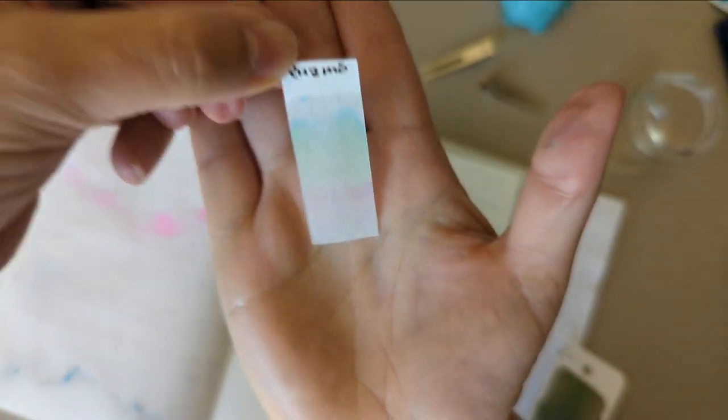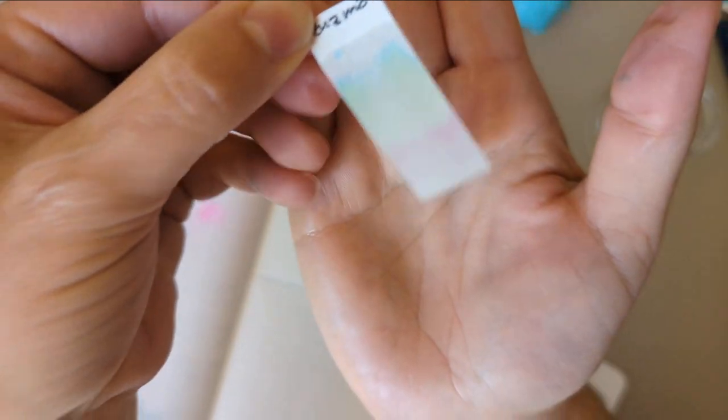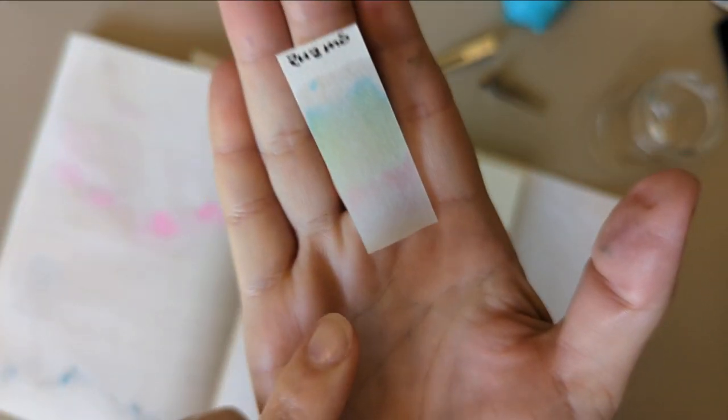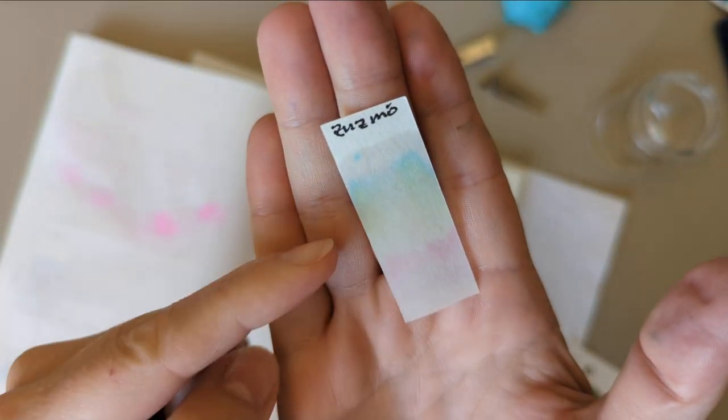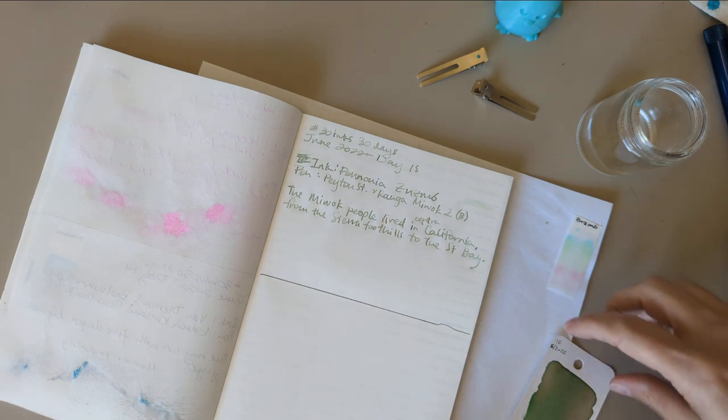Here we have the chromatography. This is really pretty. I don't know if this is in focus, but there's some pink, some sort of sage green, and a touch of blue up there. Maybe you can see it there.